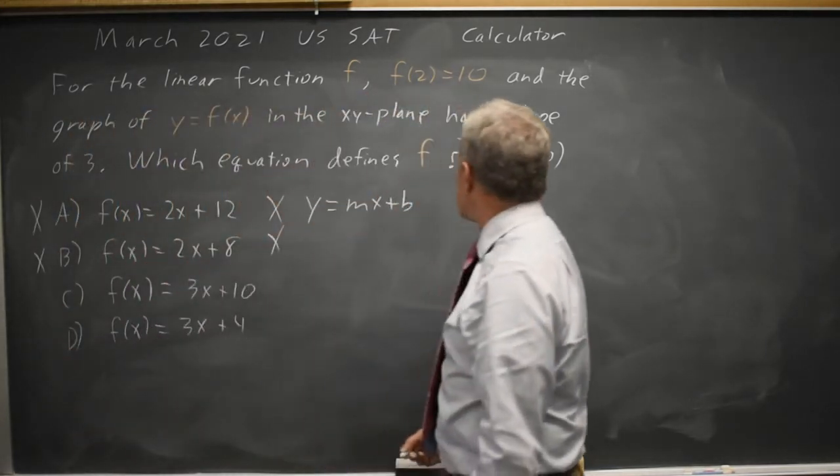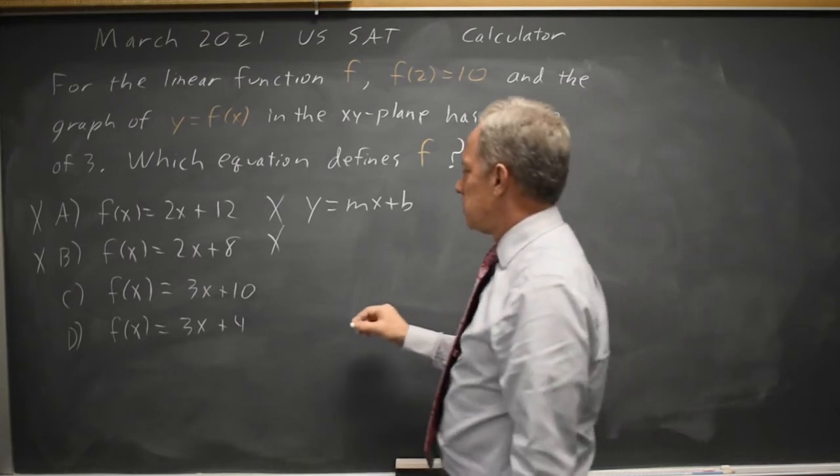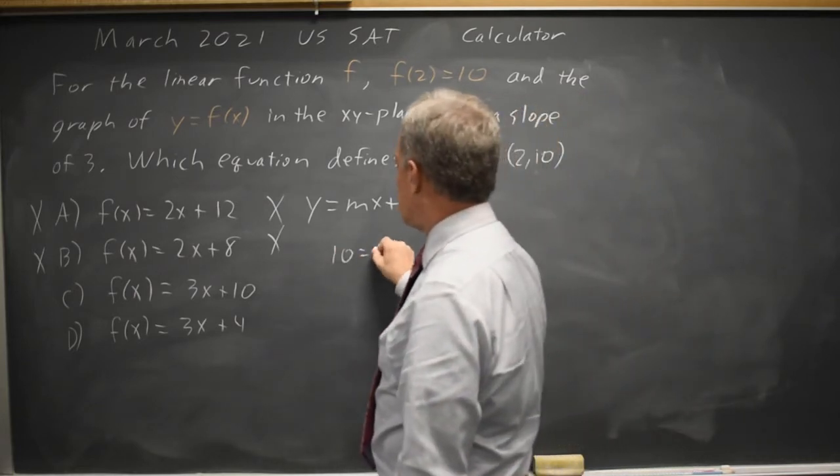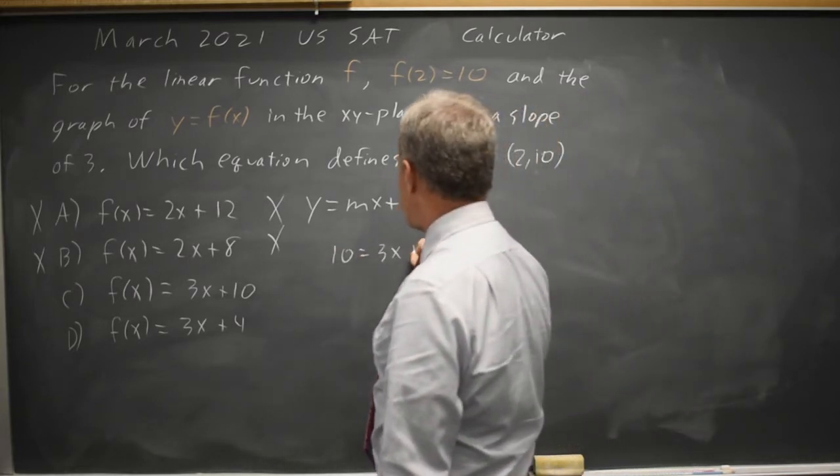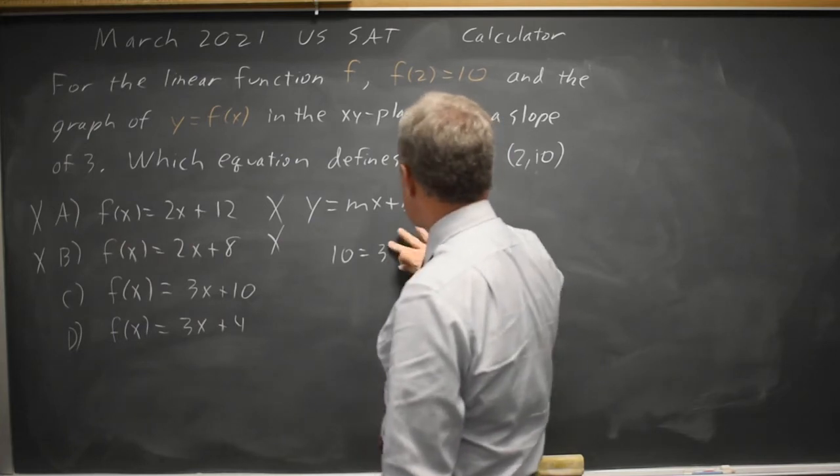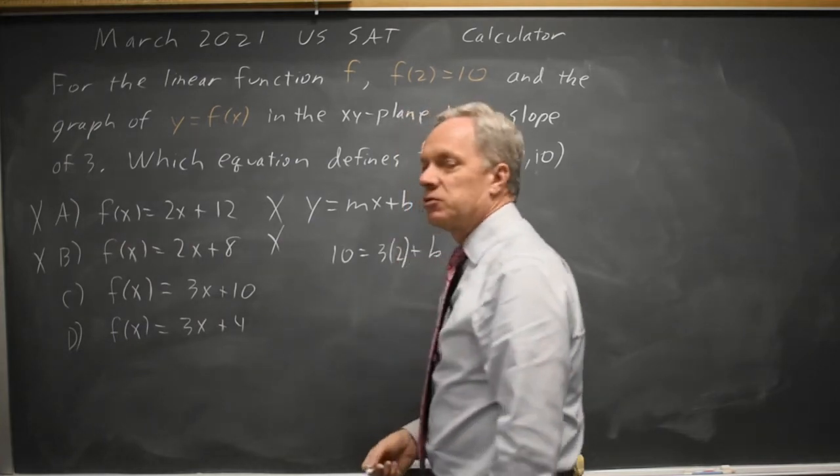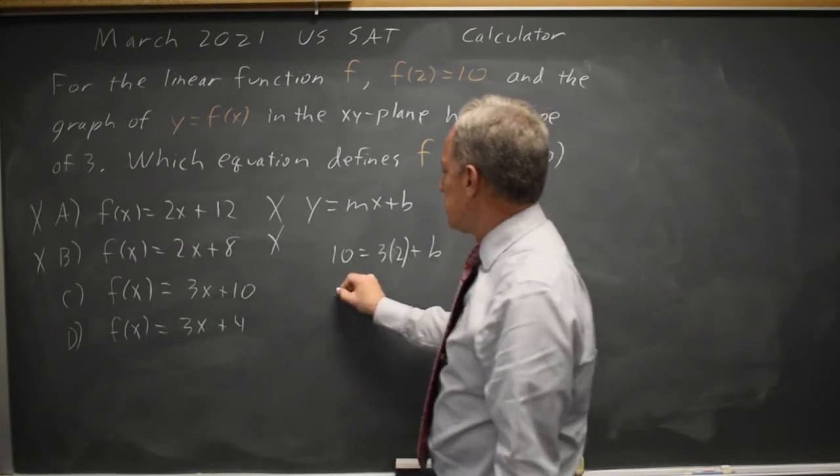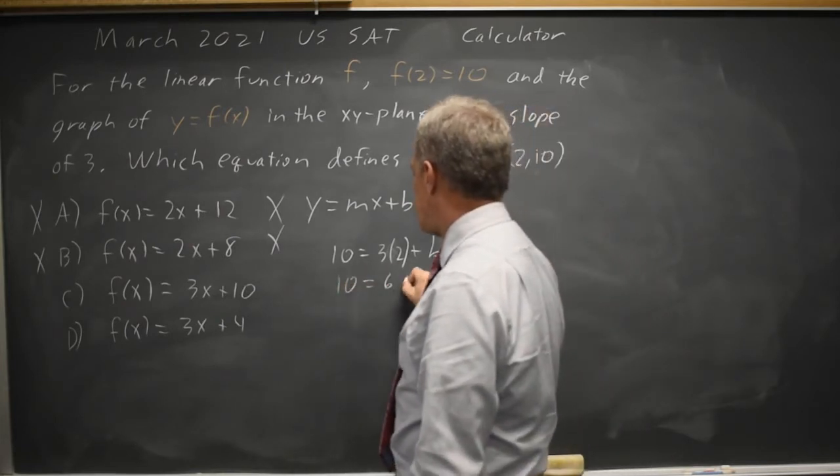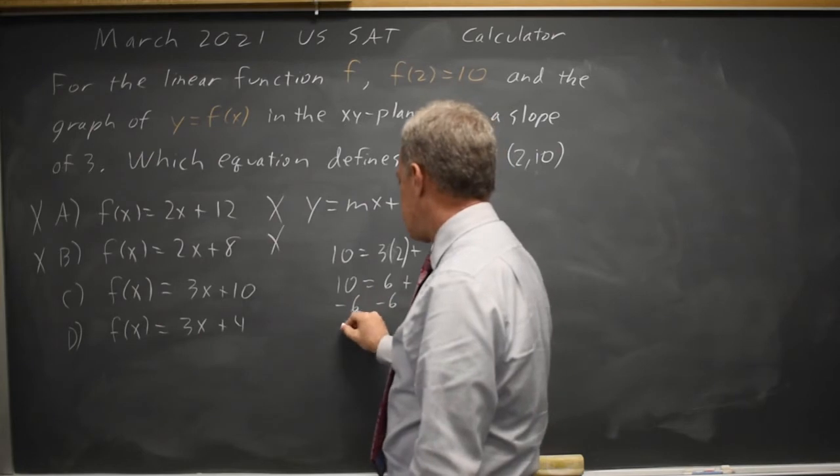If I substitute in this point, 10 equals 3x plus b when x is 2, so 10 equals 3 times 2 plus b, that's 10 equals 6 plus b, subtracting 6 from both sides.